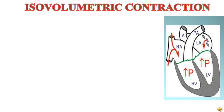There is a sharp rise in atrial pressure caused by the bulge in the AV valves, producing the C wave visible on the electrocardiograph. The pressure in the aorta is about 80 mmHg and in the pulmonary artery is 120 mmHg, causing the pulmonary valves to open. Since the AV valves have closed and the semilunar valves have not yet opened, the ventricles contract as a closed chamber and pressure inside rises rapidly. This phase lasts about 0.05 seconds.